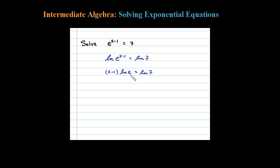e to what power is e? That's just one. You should actually memorize that. So what I actually have here is x minus 1 times 1 equals the natural log of 7. I don't need the parentheses. Let me write that as x minus 1 equals the natural log of 7. That's worth remembering - the natural log of e is 1. You can do that on a calculator and see.